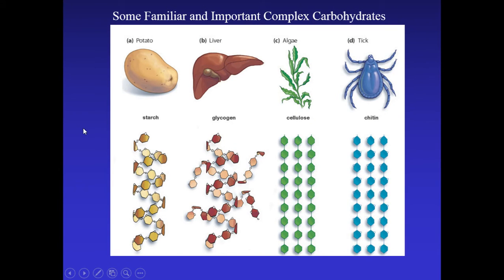Starch, found in potatoes, has a coiled structure. Because it is coiled and open, enzymes can easily break each chemical bond and release glucose for energy. Glycogen is very similar but has branches. It is stored in our liver as a source of glucose. When our supply of glucose is low, glycogen is released from the liver into the bloodstream and enzymes snip the bonds so the glucose can be used to make ATP.